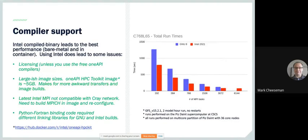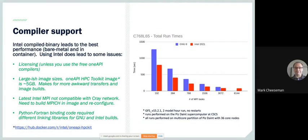You can use different compilers. There's a lot of experience using Intel for FV3 GFS binaries — we can run both GNU and Intel. Intel does have a clear performance gain. For Intel compilers, we're using the free oneAPI HPC toolkit images. If you do use those images, they are a bit large — around four and a half to five gigabytes — so if you're adding a lot of stuff, you might be moving a really large container around.